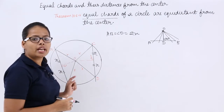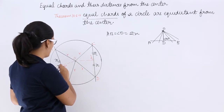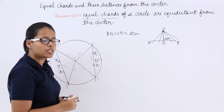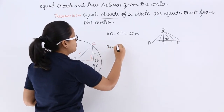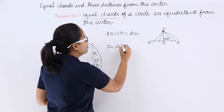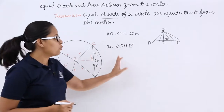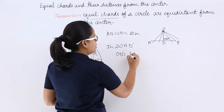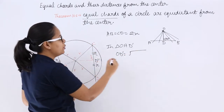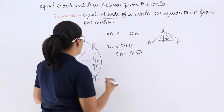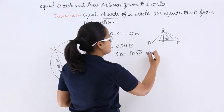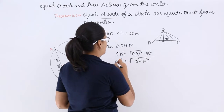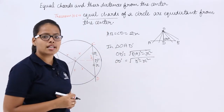From Pythagoras, you can easily calculate this distance. Let's suppose the perpendicular distances are OD' and OD''. In triangle OAD', applying Pythagoras, OD' comes out to be the square root of R squared minus x squared.